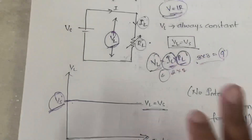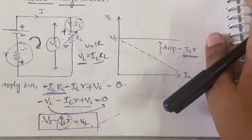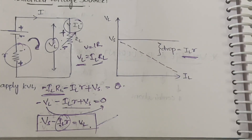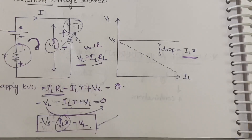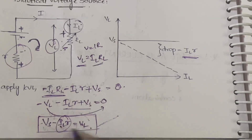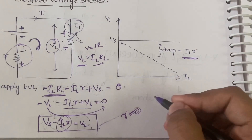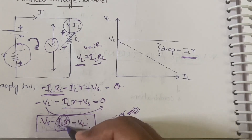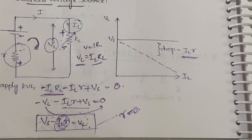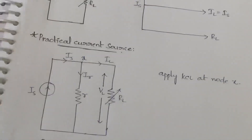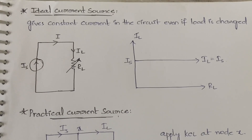In practical voltage source we have internal resistance r, whereas in ideal we don't. In real-world implementations, only the practical model applies — ideal is a theoretical concept. To convert practical to ideal, set r = 0. Then the drop term IL·r becomes zero and VL = Vs, recovering the ideal scenario.